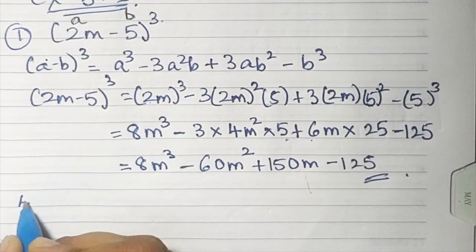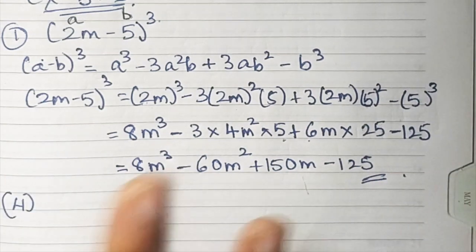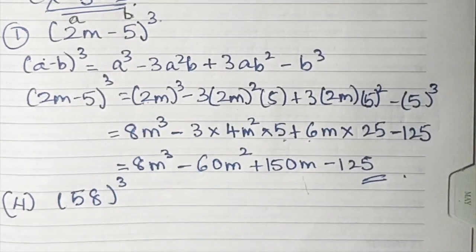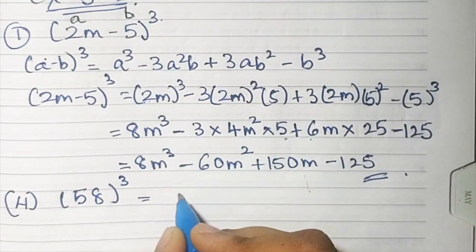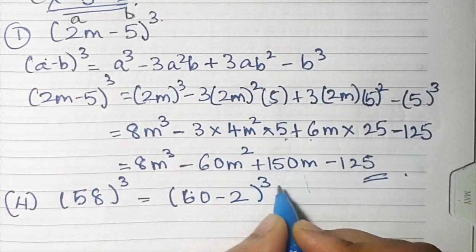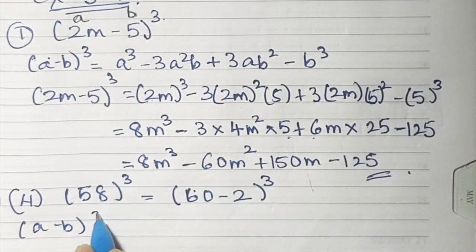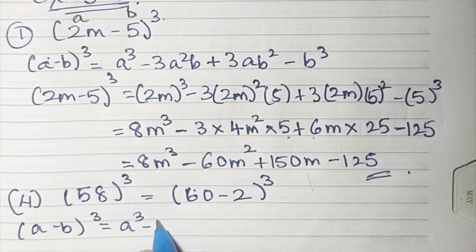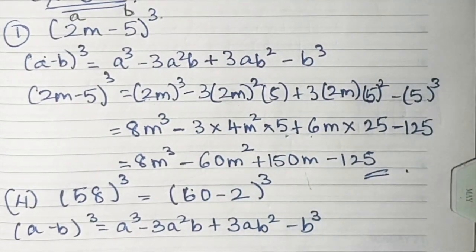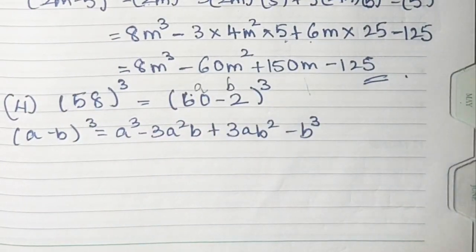Now let's do sum number 4. Sums 2 and 3 are similar to the first one, so once you do the first one you can do those. Sum number 4 is 58³. Now 58 can be written as (60 - 2)³. Again our formula comes: (a-b)³ = a³ - 3a²b + 3ab² - b³. Here a = 60 and b = 2.